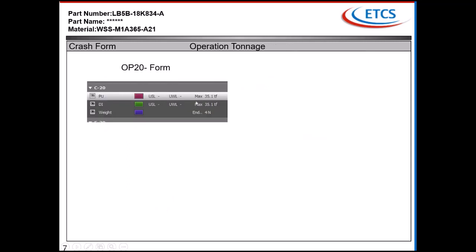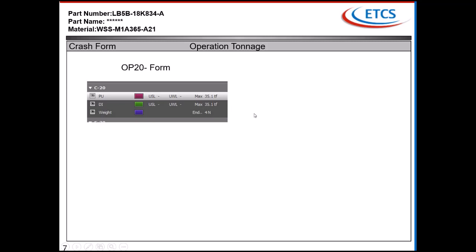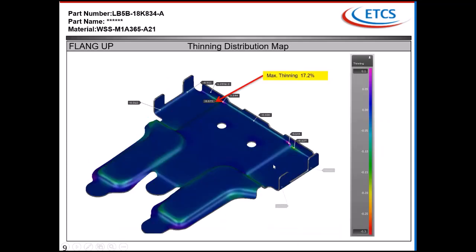The tonnage for that operation was roughly 74 tons. The second operation was a flange up. The FLD map is good, no problem. Maximum thinning is being shown as 17.2%.